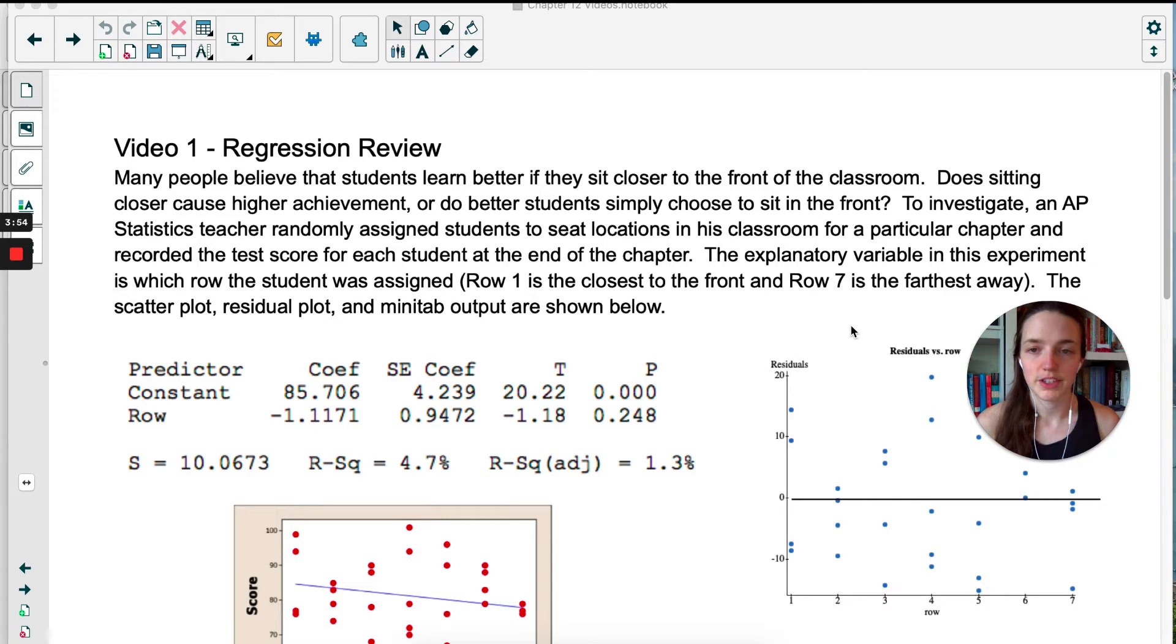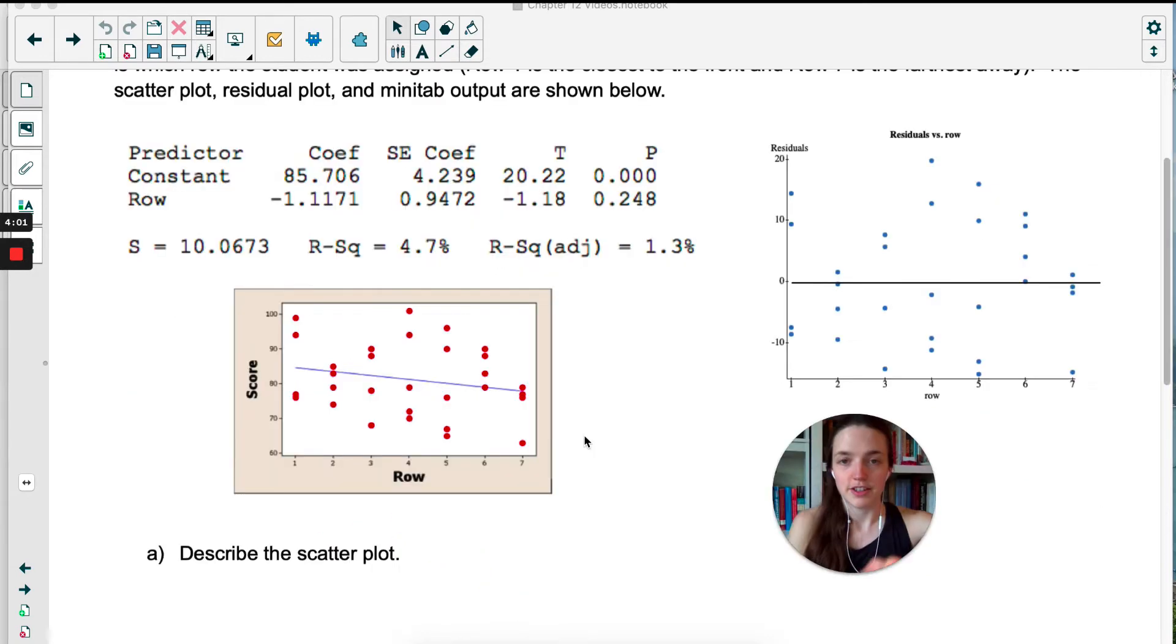Below we have a scatter plot, a residual plot, and a Minitab output. So the scatter plot is over here, bottom left. This is showing us the x variable along the bottom and the y variable on the vertical axis. And what we can see right away is that as row increases, so as we get further from the front of the room, it looks like in general scores are going down. But this doesn't look super impressive. It's not a very clear linear pattern. It kind of looks like a cloud. Up here we've got some information from Minitab. We're going to come back to that in a bit. And then over here we have the residual plot. I don't think you have a line on yours, so you might want to draw in a horizontal line at zero.